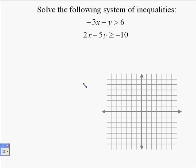The following problem is a system of linear inequalities. To solve this, we're going to graph both inequalities separately and then we're looking for the area that overlaps, the area that solves both of them.